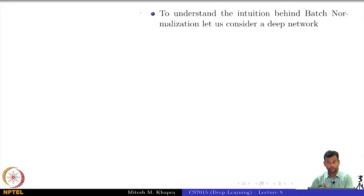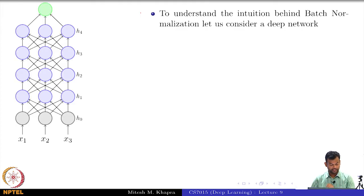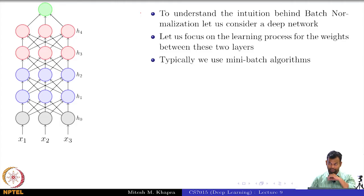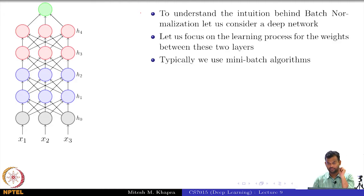To understand the intuition behind this, let us consider a deep neural network and let us focus on the last two layers H4 and H3. Typically we will use some mini-batch algorithm for training — the mini-batch version of gradient descent or mini-batch version of the Adam algorithm or any of these algorithms.